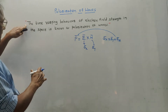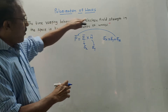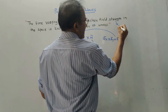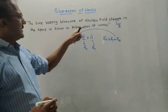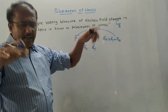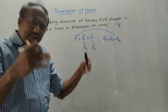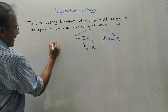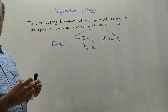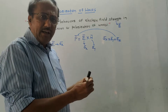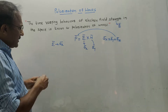Now we will discuss the definition of polarization of waves. The time-varying behavior of electric field strength E bar in space is known as polarization of waves. In simple language, whatever direction E bar has, we say the wave is polarized along that direction. For example, if E bar is along X direction (A_X bar), then the wave is polarized along X direction.